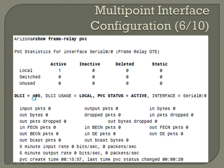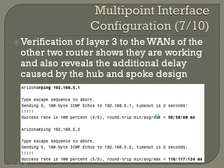Verification of layer 3 to the WANs of the other two routers shows they are working and also reveals the additional delay caused by the hub-and-spoke design. From Arizona, if you try to ping the hub router, response times are approximately 58 milliseconds. But if you try to reach the other router connected through that same PVC, it effectively doubles the amount of time. That kind of illustrates the problems you can have running VoIP with a frame-relay hub-and-spoke design, since traffic has to traverse through the hub.